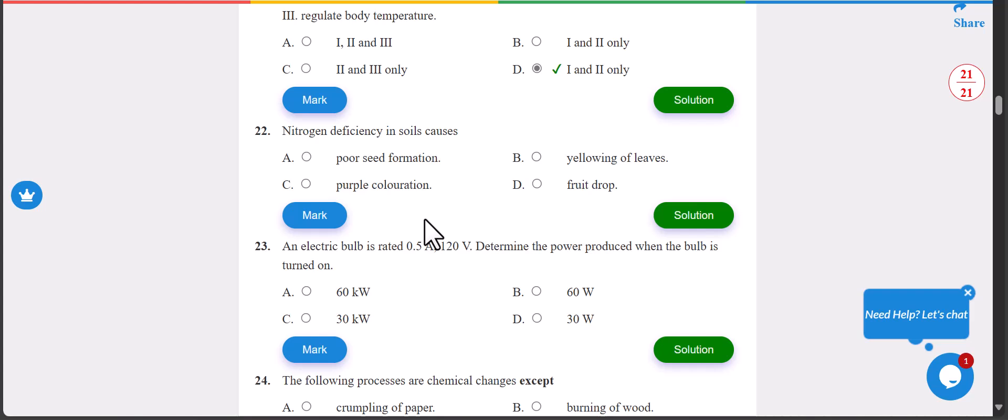Number 22: natural deficiency in soil causes what disorder? B, yellowing of the leaves. Yellowing of the leaves is the answer.